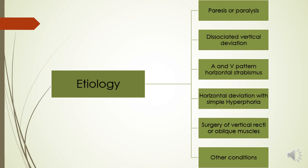Cyclo deviation is also seen with horizontal deviation with simple hyperphoria, or when surgical correction is done with the recti or oblique muscles, causing overaction or underaction. Other conditions responsible include endocrine ophthalmopathy, myasthenia gravis, and plagiocephaly — all related to neurological conditions.